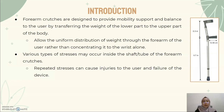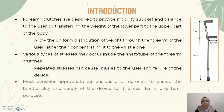For example, it allows the weight to be distributed uniformly through the forearm of the user, rather than to the wrist alone. There are various types of stresses that may occur inside the shaft of these forearm crutches, such as tensile, compressive, shear, torsion, and bending. These repeated stresses can cause injuries to the user and also failure of the device. By considering the appropriate dimensions and material for these forearm crutches, we will be able to ensure the functionality and safety of the device for the user for long-term purposes.